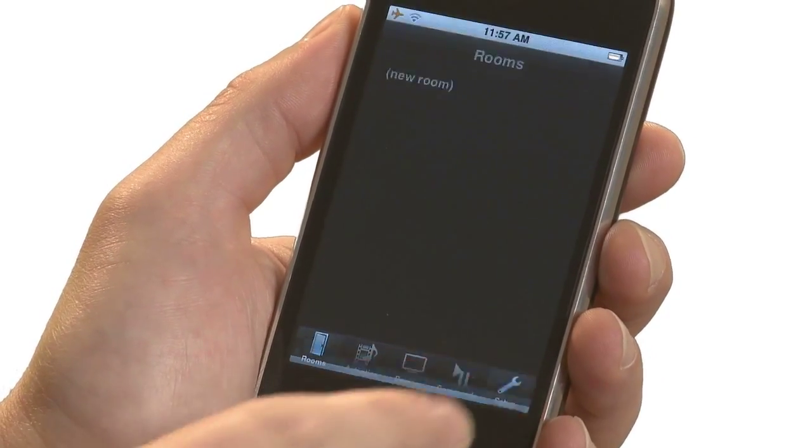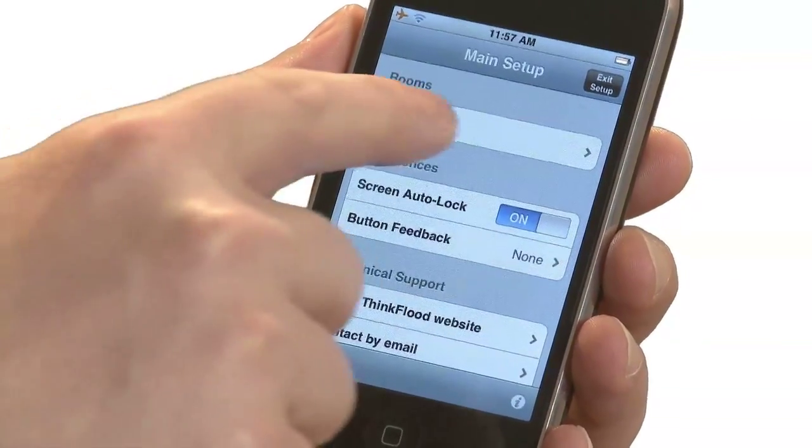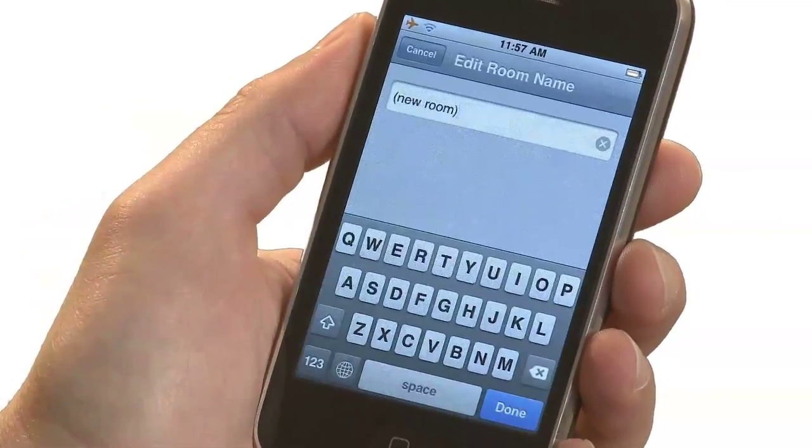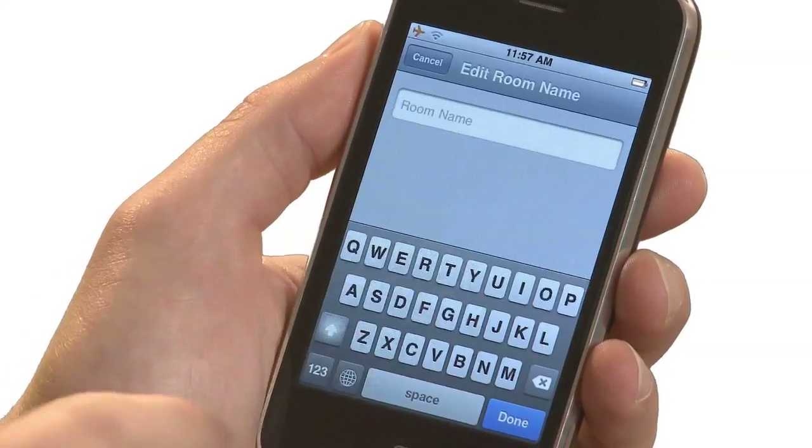From the main setup screen, we can select our new RedEye room. If you'd like, you can give it a name. I'll call this one Family Room.